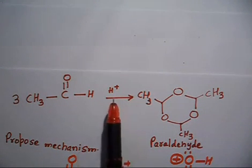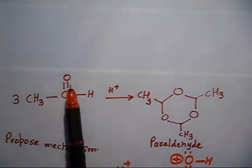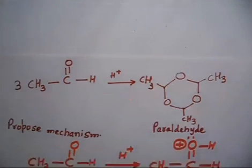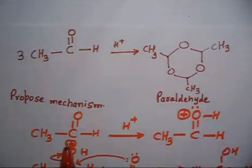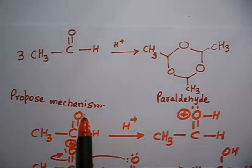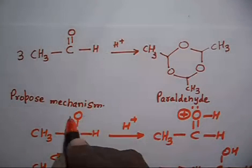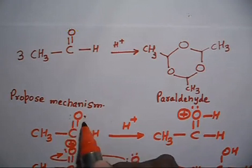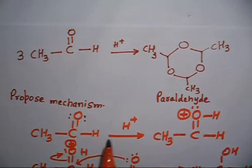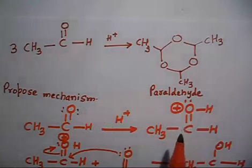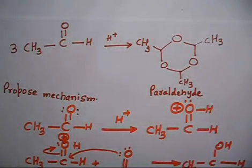Use H⁺ to make acidic conditions — first attack H⁺ on oxygen so that this carbon becomes more electrophilic. So CH₃CHO reacts with H⁺. There are two lone pairs on oxygen; one lone pair reacts with H⁺ and this makes CH₃CH=OH⁺. After this, this carbon becomes more electrophilic because the double bond has a tendency to go to resonance.